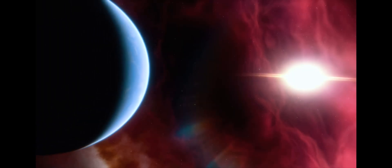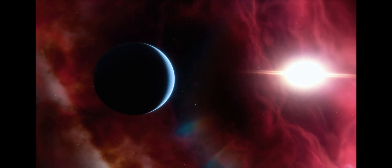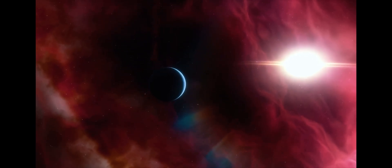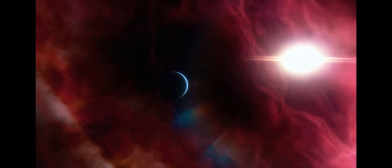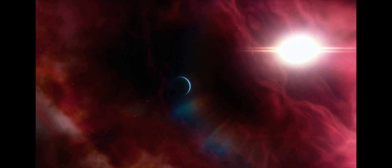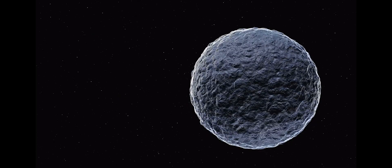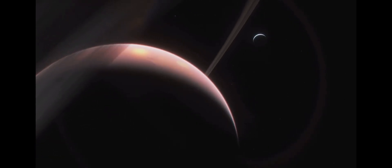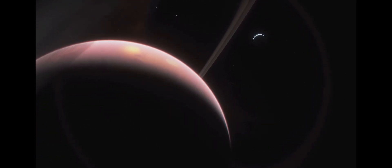Kepler-452b immediately stood out because it resides within its star's habitable zone. The habitable zone is that sweet spot around a star where temperatures are just right for liquid water to exist on the surface of a planet. This is crucial because water is considered essential for life as we know it. Finding a planet in the habitable zone was a major milestone in the search for life beyond Earth.